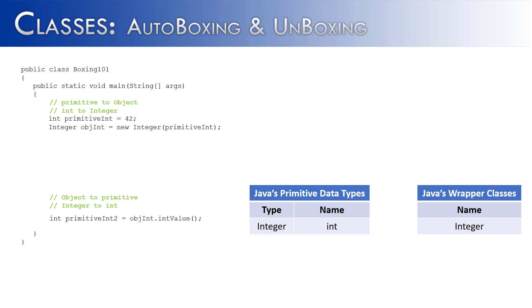So I've created the class Boxing101 and what we're going to do is we're going to start with a primitive int and I've called that primitive int primitive int and I've assigned it the value 42. And what I want to do with that 42 is I want to take an integer object and wrap it around the primitive.